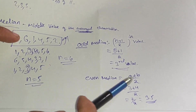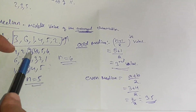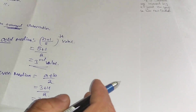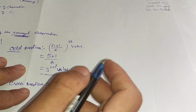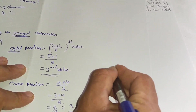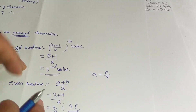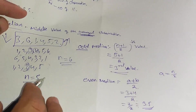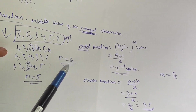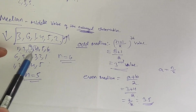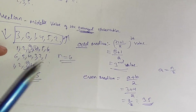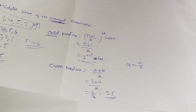To find a using the formula: a equals n/2, so 6/2 = 3, giving the third value as a. Then b is the next value immediately after a. This is a simple way to identify the two middle values for the even median formula.